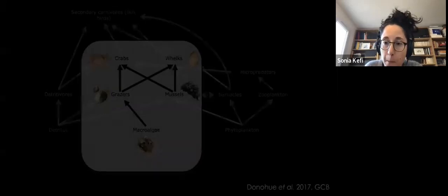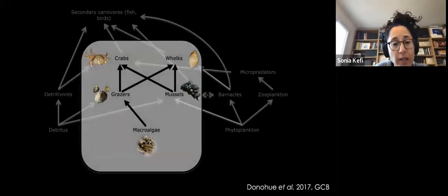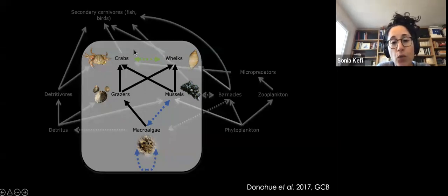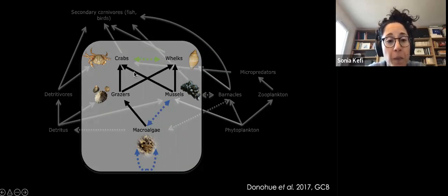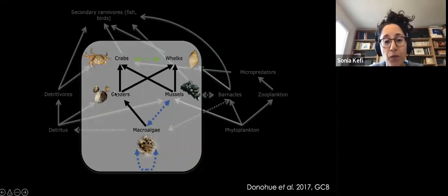Going back to the rocky shore food web of the east coast of Ireland, other types of interactions are also well known. For example, there is clear competition for space between mussels and all the macroalgae taxa, and also among macroalgae taxa themselves. There is also an interaction called foraging modulation that occurs between the two predators, crabs and whelks: each predator changes its feeding preference depending on the presence of the other. When alone, they tend to prefer grazers, but when together they rebalance their feeding preference between grazers and mussels.